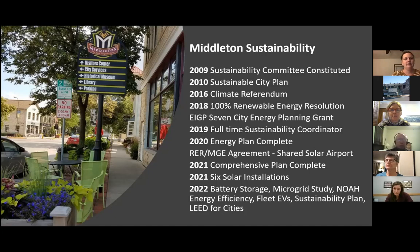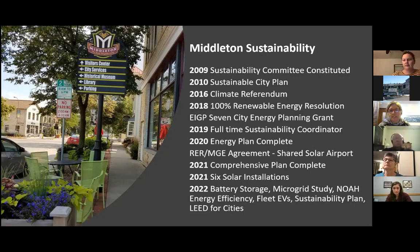Those things initially provided us with a plan but also the social and political capital to move forward more quickly on climate change policies. From that climate referendum, the committee felt they could put forward a strong renewable energy resolution designating goals of 100% renewable energy by 2040 for the city and 2050 community-wide. We received a planning grant from the state office of energy innovation in conjunction with Stoughton — seven communities total — with Slipstream as our energy consultant.